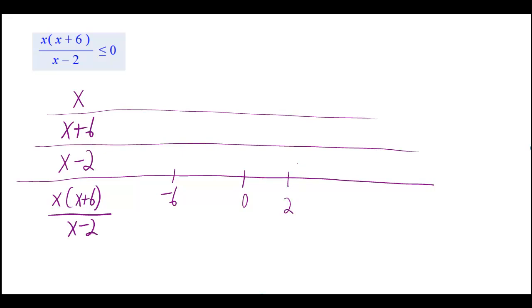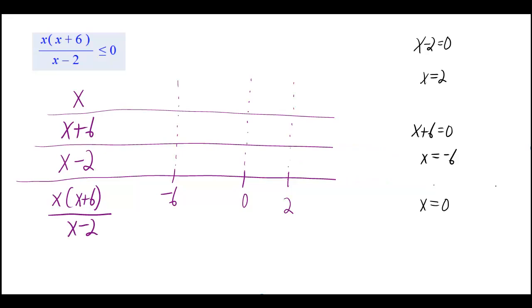Now, why do we use all them numbers? You get them by finding what is referred to as the critical points. You take each one of your factors and you set them equal to zero. So x minus two equals zero when x equals two. x plus six equals zero when x equals negative six. And x equals zero when x equals zero. If you couldn't figure that one out, you got a problem and you should withdraw from your class.